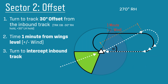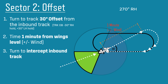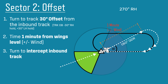Sector 2 is the offset entry, sometimes referred to as a teardrop entry due to its shape. On reaching the fix, turn to track a 30 degree offset from the inbound track, often referred to as the gate. This is not a free-air track but a QDR from the fix. You can calculate this track by taking 30 degrees from the outbound track in a right-hand hold, or adding 30 degrees in a left-hand hold — here it would be 090 minus 30, or 060 degrees. On reaching this heading wings level, start a timer and fly for one wind-corrected minute, then turn to intercept the inbound course.